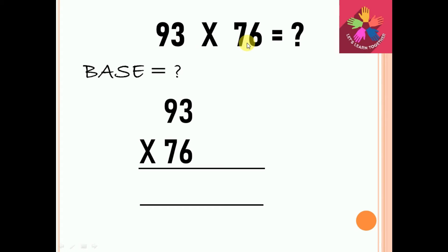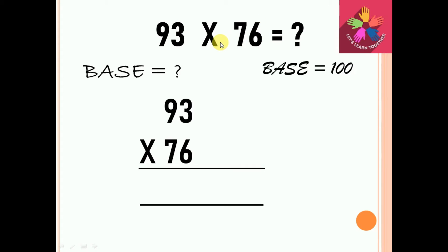Let's discuss 93 into 76. The first step: find the base. If we take 10, the difference from 93 would be very large. The next multiple is 100. 100 is close to both 93 and 76, so we take the base as 100.